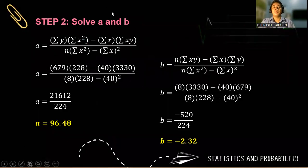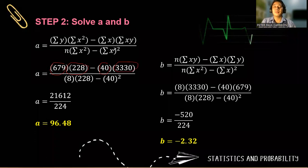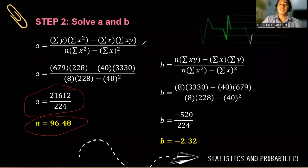Step number two, we have to solve for a and b using the formula. So we have 679, which is the summation of y, summation of x squared is 288, minus 40 the summation of x. And then the summation of the product of x and y is 3,330 times n, because there are eight students there, times 288 minus 40 squared. Follow the operation. So this will be the answer, 21,612 over 224. So our value of a is, in two decimal places, is 96.48.